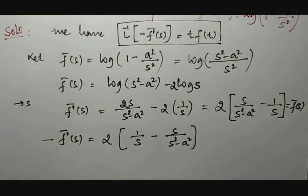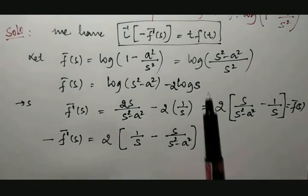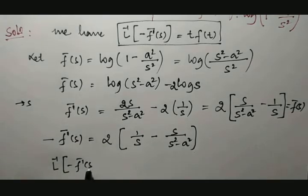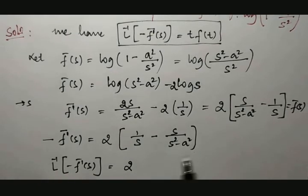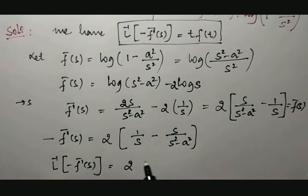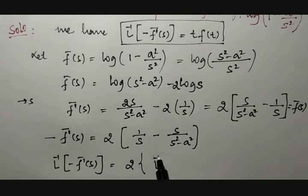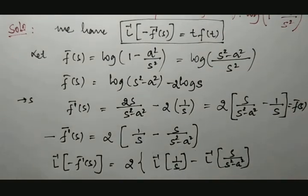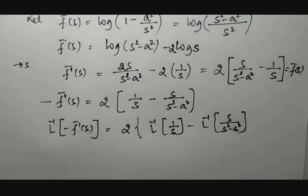Now applying the inverse Laplace transform, the inverse Laplace of minus f-bar-dash of s equals 2 times the quantity: inverse Laplace of 1 over s, minus the inverse Laplace of s over s-squared minus a-squared.